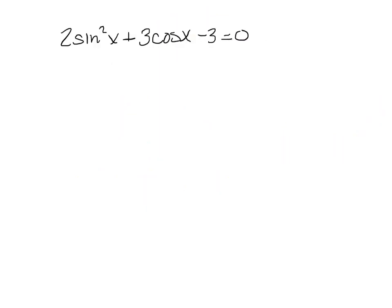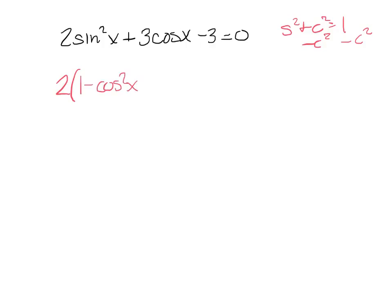On this one I need to solve for x. At first I think double bubble because of sine squared, but there's also a cosine, so I can't. I'll replace sine squared using the identity sine squared plus cosine squared equals 1, rearranged to sine squared equals 1 minus cosine squared. Now I have all cosines. First I multiply through by 2, giving 2 minus 2 cosine squared.